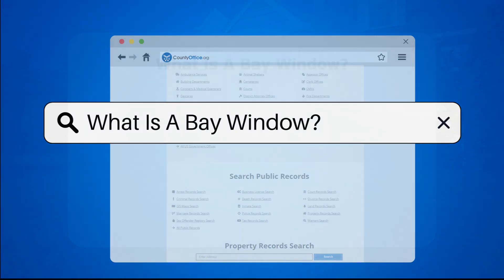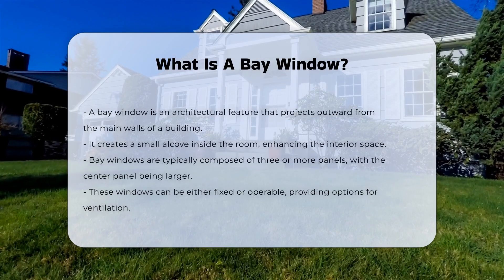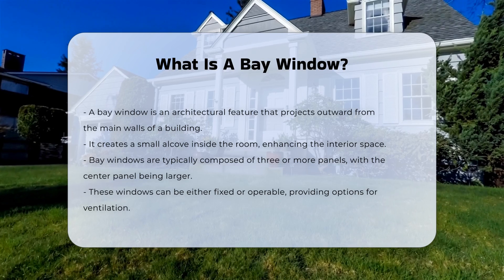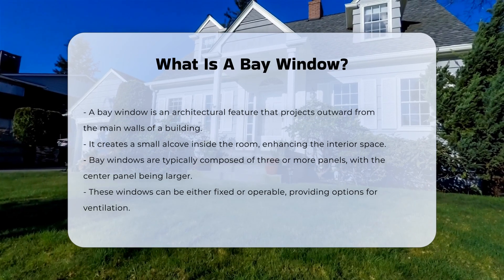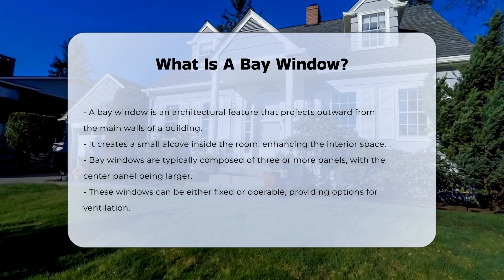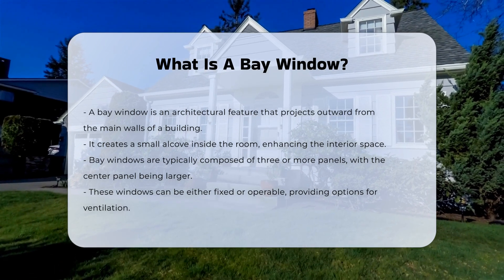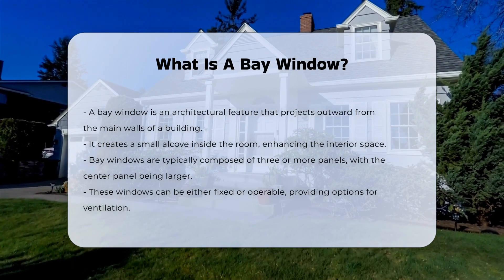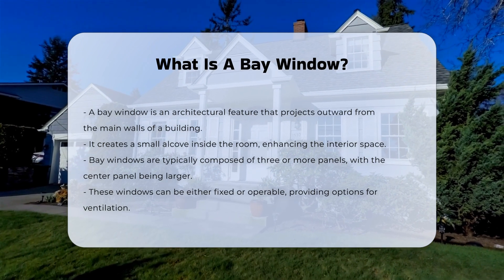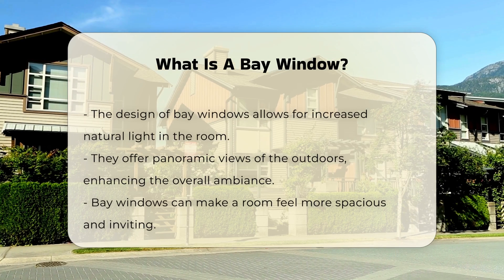A bay window is a popular architectural feature in residential buildings. It typically projects outward from the main walls, creating a small alcove inside the room. Bay windows are often composed of three or more panels. The center panel is usually larger than the side panels. These windows can be fixed or operable, allowing for ventilation.